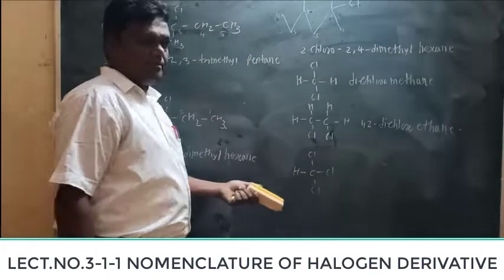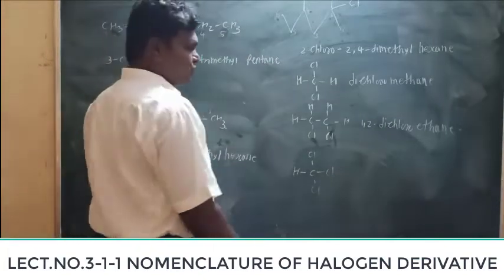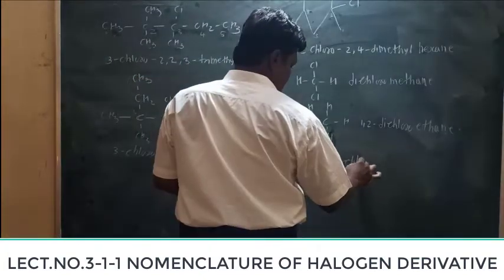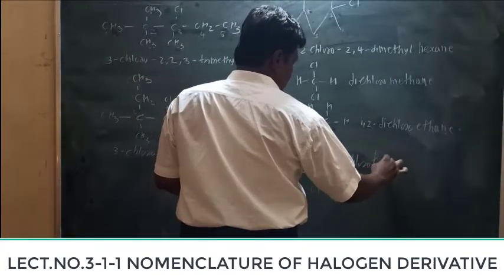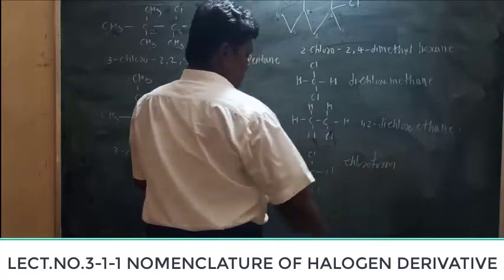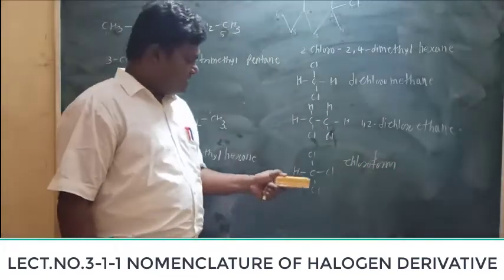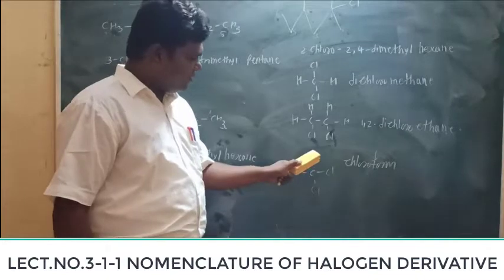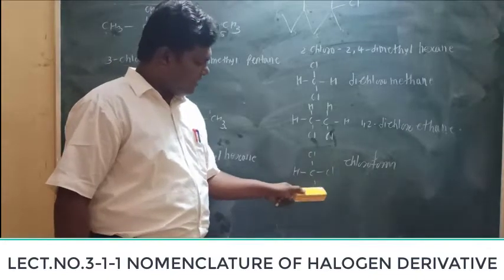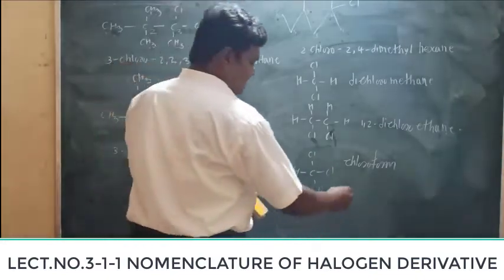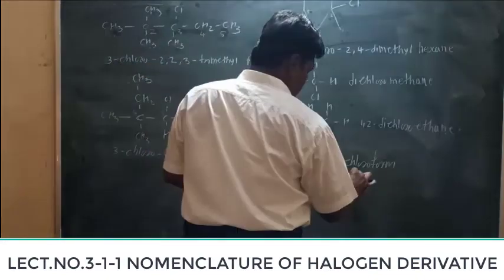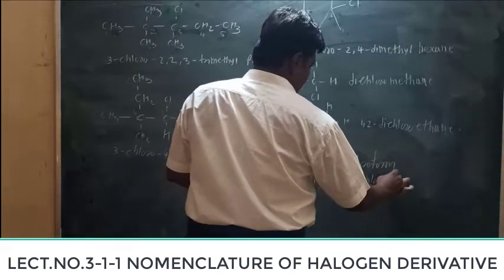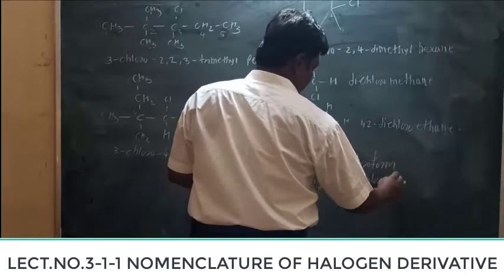For trihalogen derivatives, the best-known compound whose common name is chloroform — if you want to write its IUPAC name, it is very simple: trichloromethane. There are three chlorine atoms on a one-carbon (methane) chain, so the name is trichloromethane.